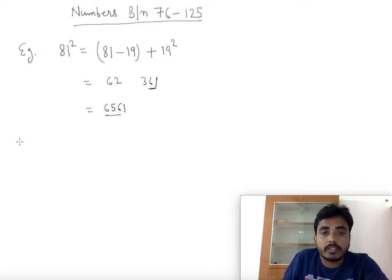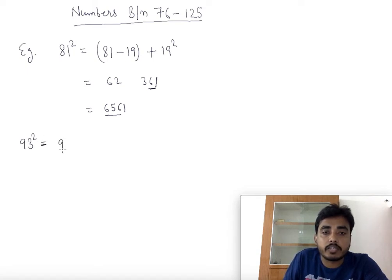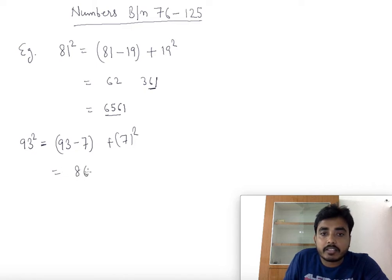Now let's find the square of 93. 93 is 7 lesser than 100. So we compute 93 minus 7 plus 7 squared. That gives 86 and 49, so the answer is 8649.